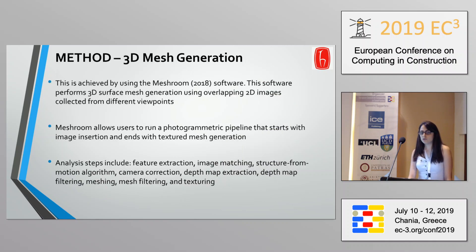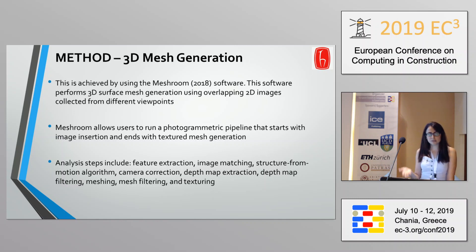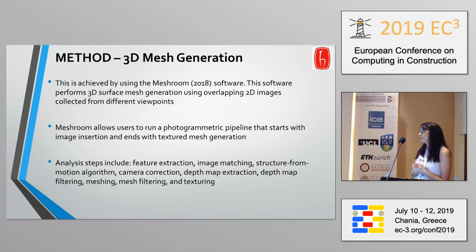We then continued with 3D mesh generation using Meshroom, a photogrammetric pipeline which starts with image insertion and ends with texture mesh generation. The analysis steps include feature extraction, image matching, structure from motion algorithms, camera correction, depth map extraction, depth map filtering, meshing, mesh filtering, and texturing.